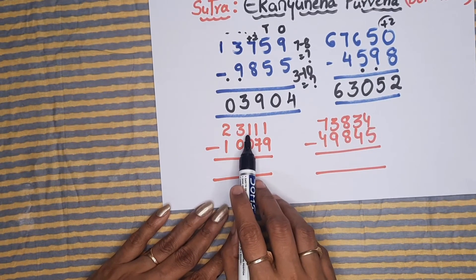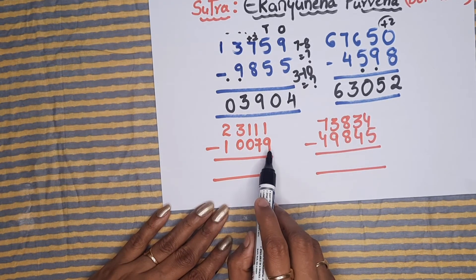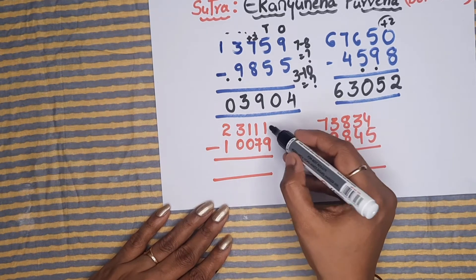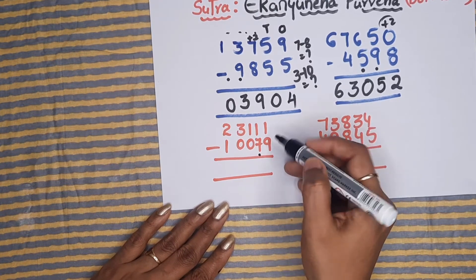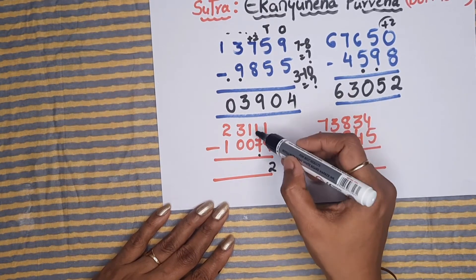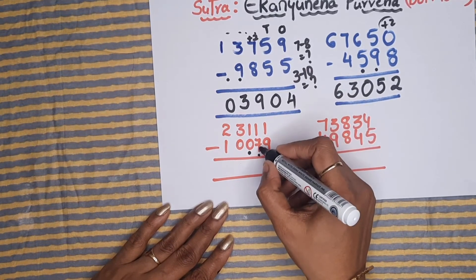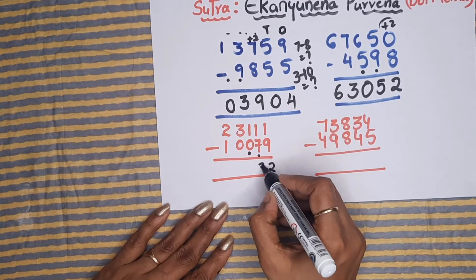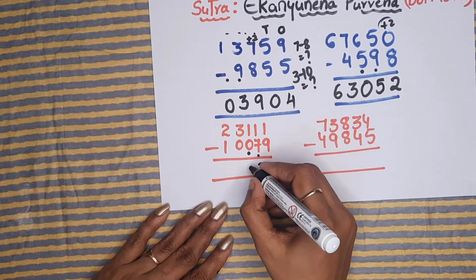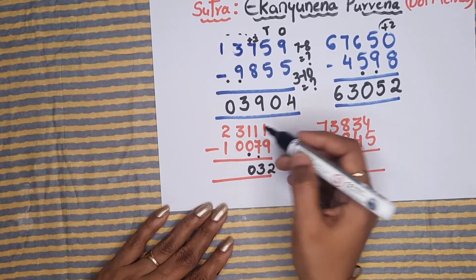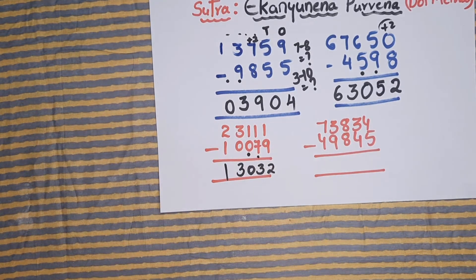Let's try the same concept on the third sum: 23111 minus 1079. Working quickly: 1 minus 9 is not possible — keep a dot. The friend of 9 is 1, so 1 plus 1 equals 2. Then 1 minus 8 is not possible — keep a dot. Friend of 8 is 2, so 2 plus 1 equals 3. Then 1 minus dot gives 1 minus 1 equals 0. Finally, 3 minus 0 is possible giving 3, and the leading digit gives 2 minus 1 equals 1. The answer is 13032.